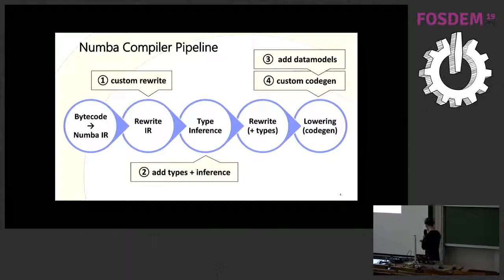Next, you have the opportunity to rewrite this intermediate representation. For example, to do parallelization, to do all kinds of optimizations. And you can add your own rewriters. Then the next step is type inference, where you can also add your own types and do type inference of your own functions. Then you have another opportunity to do another rewrite phase, but this time with the actual types.